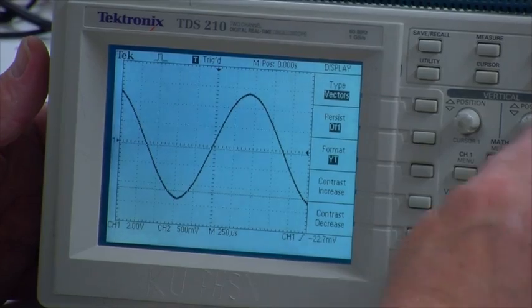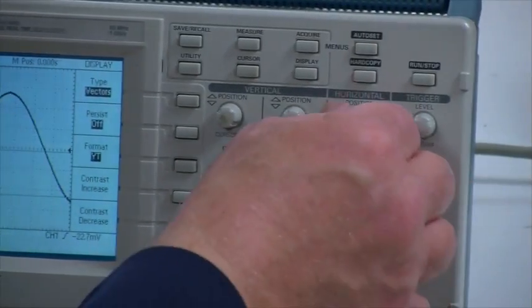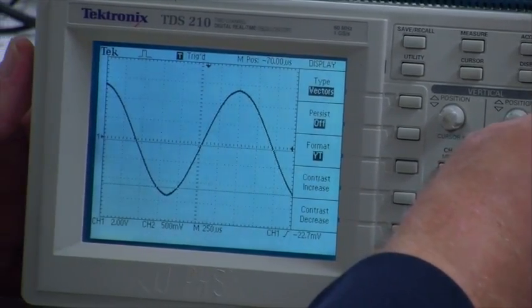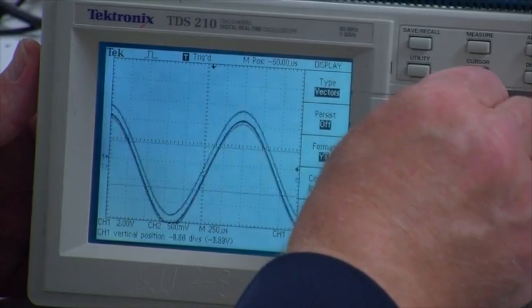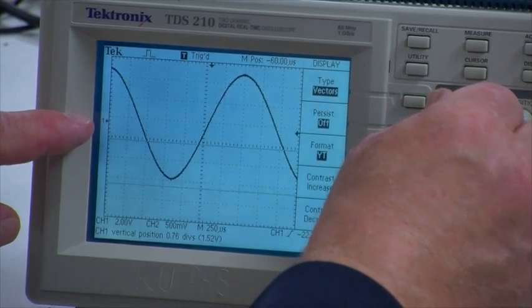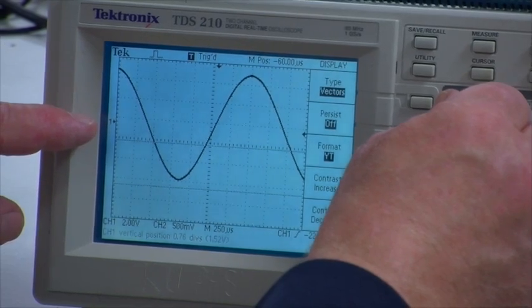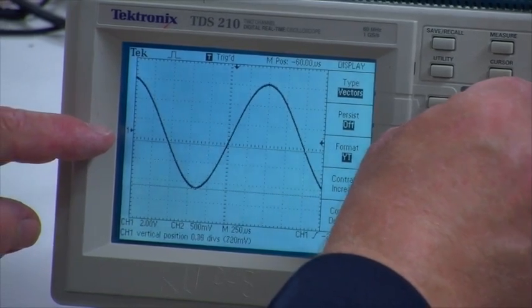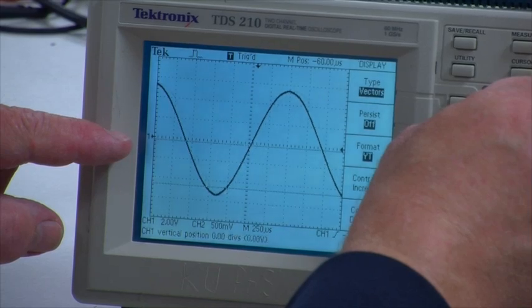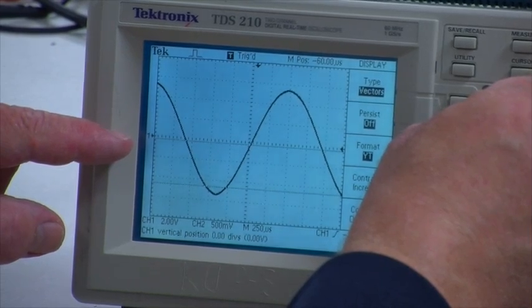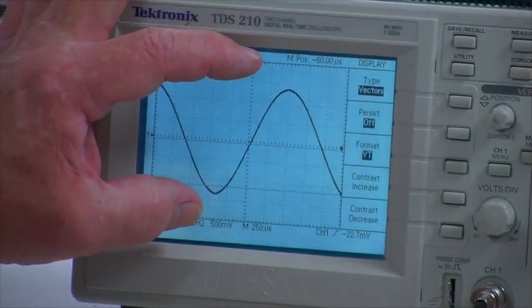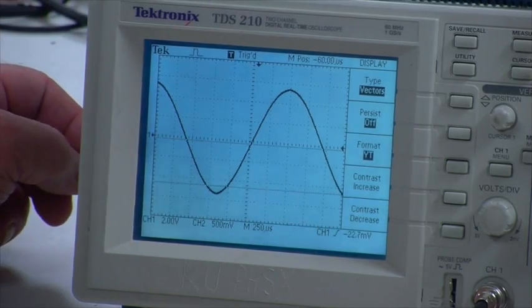All of these have position knobs. In the horizontal case, it'll move the signal left and right. In the vertical case, it'll move the signal up or down. There's a number and an arrow, in this case number one, and that tells us where the zero point of the signal is. A lot of times we'll want that set right on the x-axis so that the signal is centered on the screen.